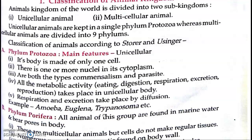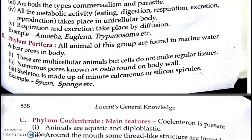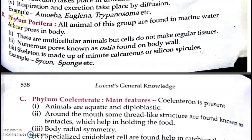Phylum Porifera: all animals of this group are found in marine water and bear pores in their body. These are multicellular animals, and the multicellular animals start from Porifera. The cells do not make regular tissues. There are numerous pores known as Ostia found on the body walls.